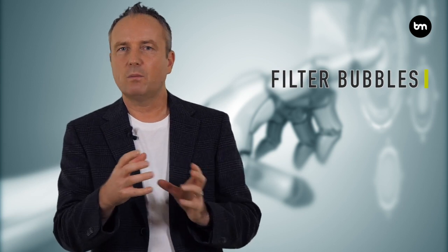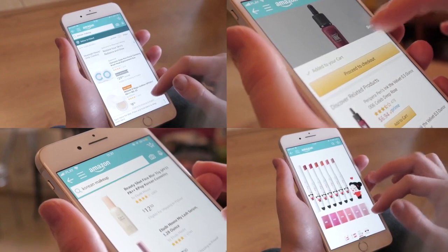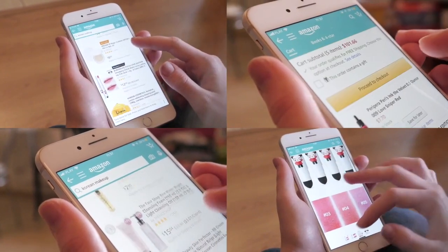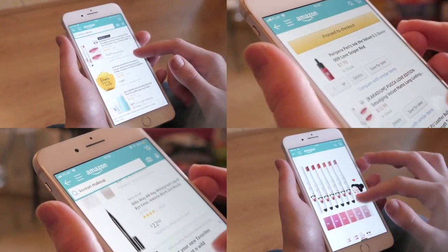Filter bubbles. This is another challenge linked to biases. What happens now is that AI is very good at pattern recognition. We see this on Amazon, that it can really recommend products to us that we might like or not like, but it's also used in social media.